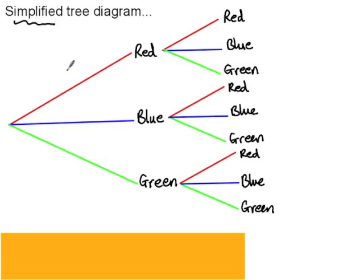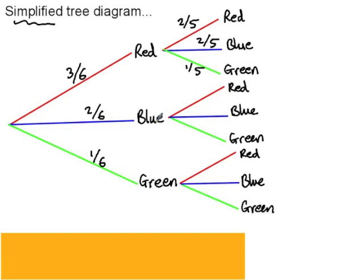To start with we've got three out of six red marbles, two out of six blue marbles and one out of six green marbles. Once we've selected a red marble, we now have five marbles remaining in the bag — two red, two blue and one green. Once we've selected a blue marble, we've got three out of five red, one out of five blue and one out of five green. And if we select a green marble first, we then have three out of five red, two out of five blue and zero out of five green.